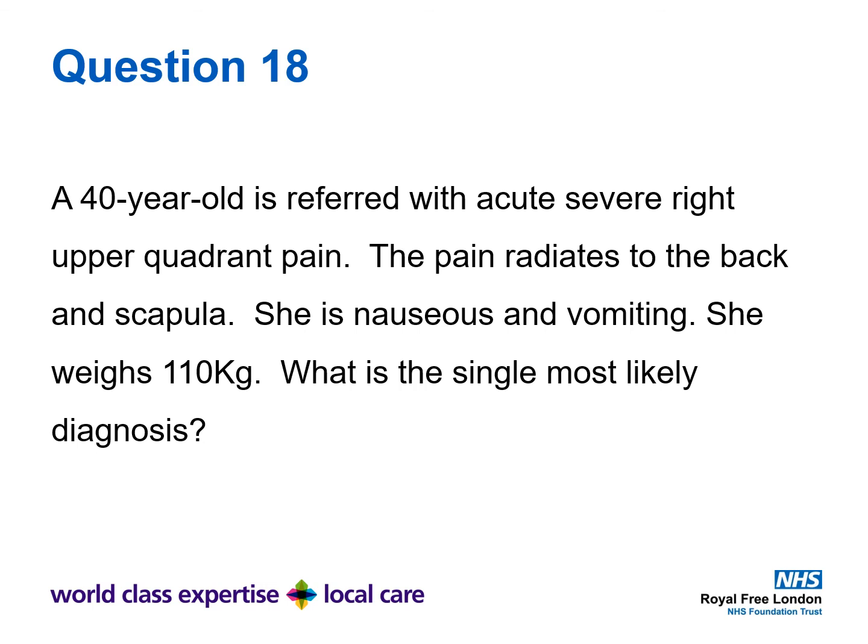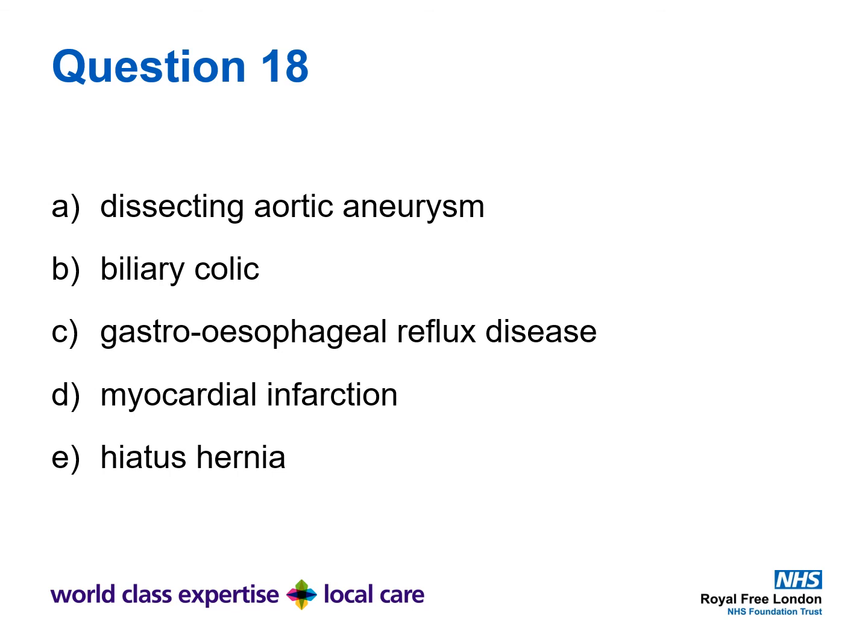Question 18. A 40 year old female is referred with acute severe right upper quadrant pain. The pain radiates to the back and the scapula. She is nauseous and vomiting. She weighs 110 kilos. What is the single most likely diagnosis? A: Dissecting aortic aneurysm, B: biliary colic, C: gastroesophageal reflux disease, D: myocardial infarction, or E: hiatus hernia?